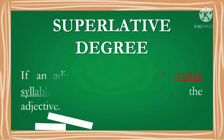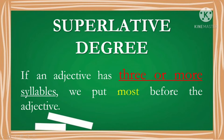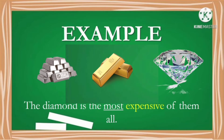Also, in the superlative degree, if an adjective has three or more syllables, we put 'most' before the adjective. For example, the diamond is the most expensive of them all. The adjective 'most expensive' compared the diamond to the other jewelleries. We put 'most' before the adjective since 'expensive' has three syllables.